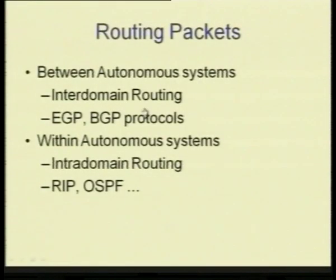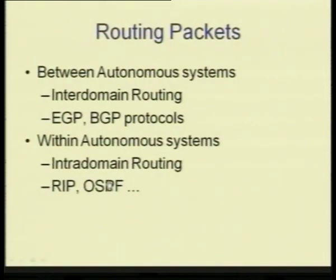Given these different types of autonomous systems, we need to consider how packets are routed between them. There are two different routing domains: routing between autonomous systems — called inter-domain routing — uses protocols like EGP (exterior gateway protocol) and BGP (border gateway protocol). Routing within autonomous systems — called intra-domain routing — uses protocols we have already looked at: RIP and OSPF, which use distance vector and link state routing mechanisms.